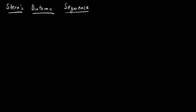We're going to start by writing a 1 and a 1, then drop those two 1s down to the next row and put a 2 in between them — so 2 is 1 plus 1. Then drop down the 1, the 2, and the 1, and put a 3 between the adjacent pairs: 1 plus 2 is 3, and 2 plus 1 is 3.